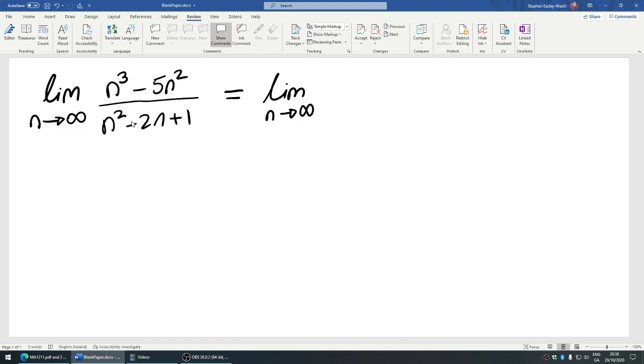So limit as n goes to infinity. Each piece divided by n cubed would become 1 minus 5 over n, and then 1 over n minus 2 over n squared plus 1 over n cubed.